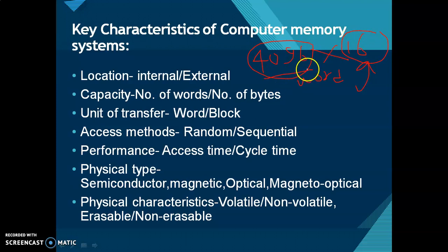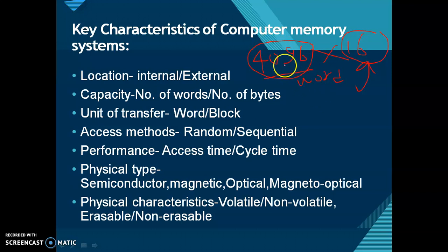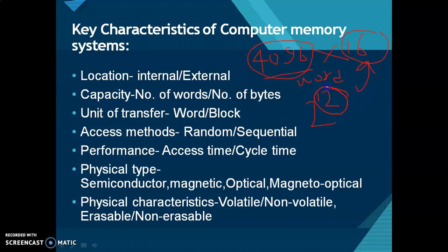From the capacity we can determine how many address lines will be in the computer. When we raise 2 to a power to get 4096, that is 2 to the power 12, it means 12 bits are required for address lines, and 16 bits for data lines.